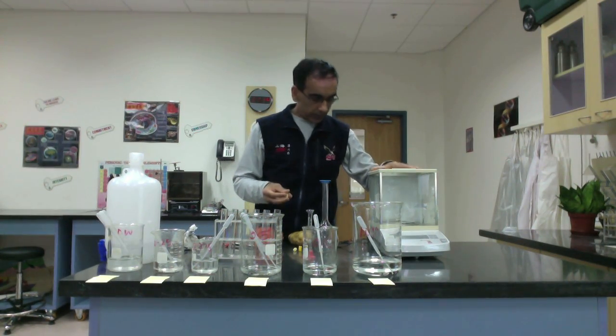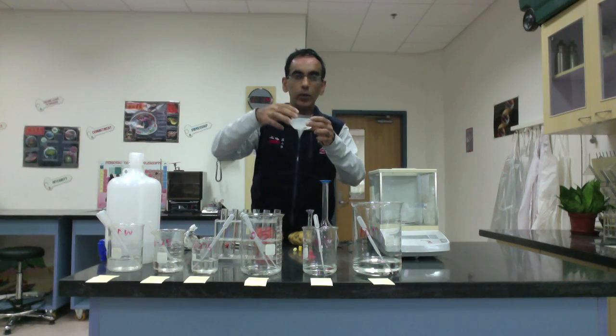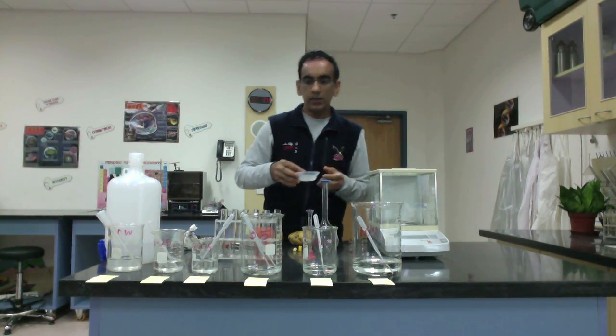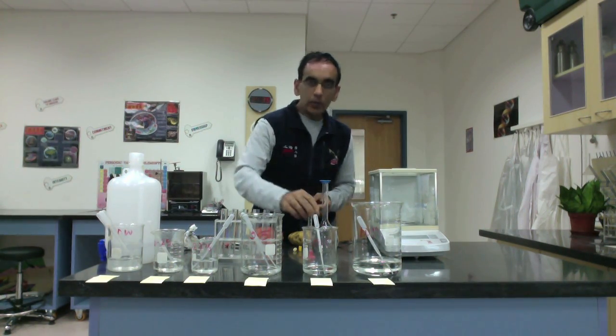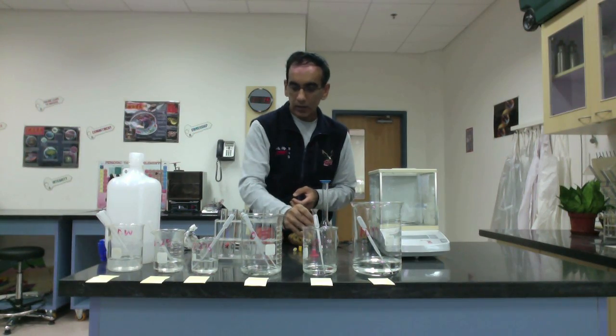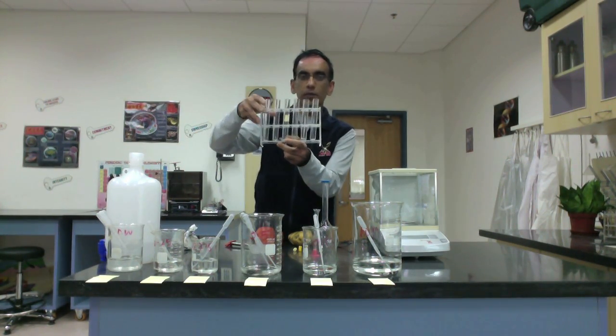And then we will find the mass by placing these pieces into a weighing boat and then using a very accurate balance to determine the starting mass of each piece of tissue. Then we will measure out about 10 milliliters of each solution and label each solution in this series of test tubes.